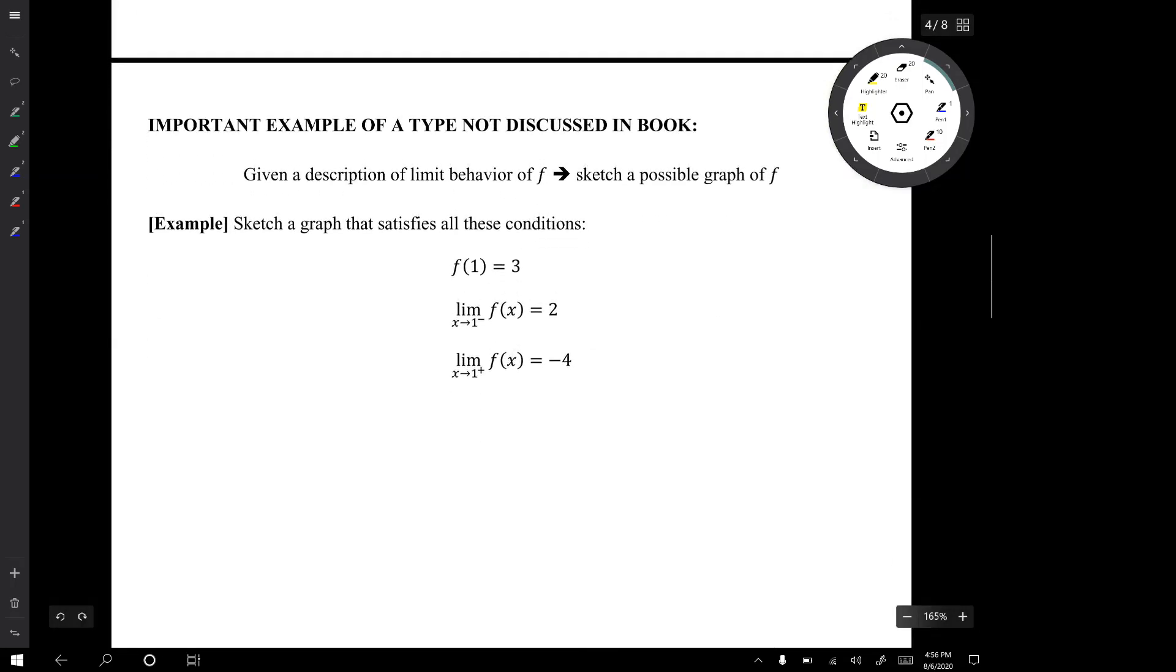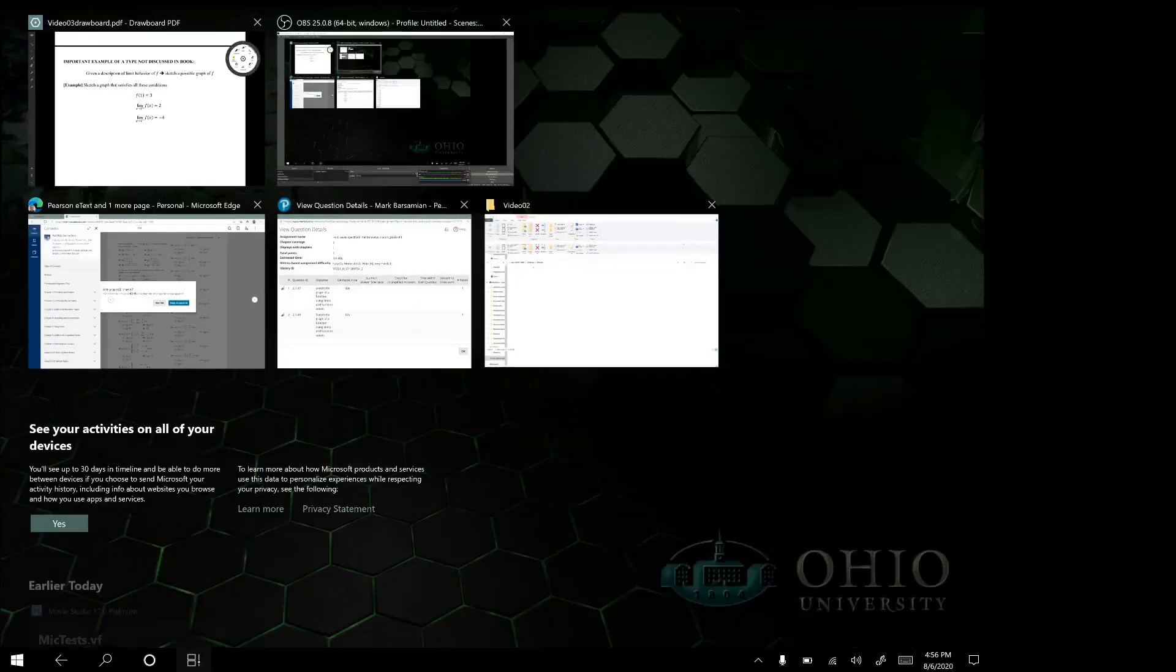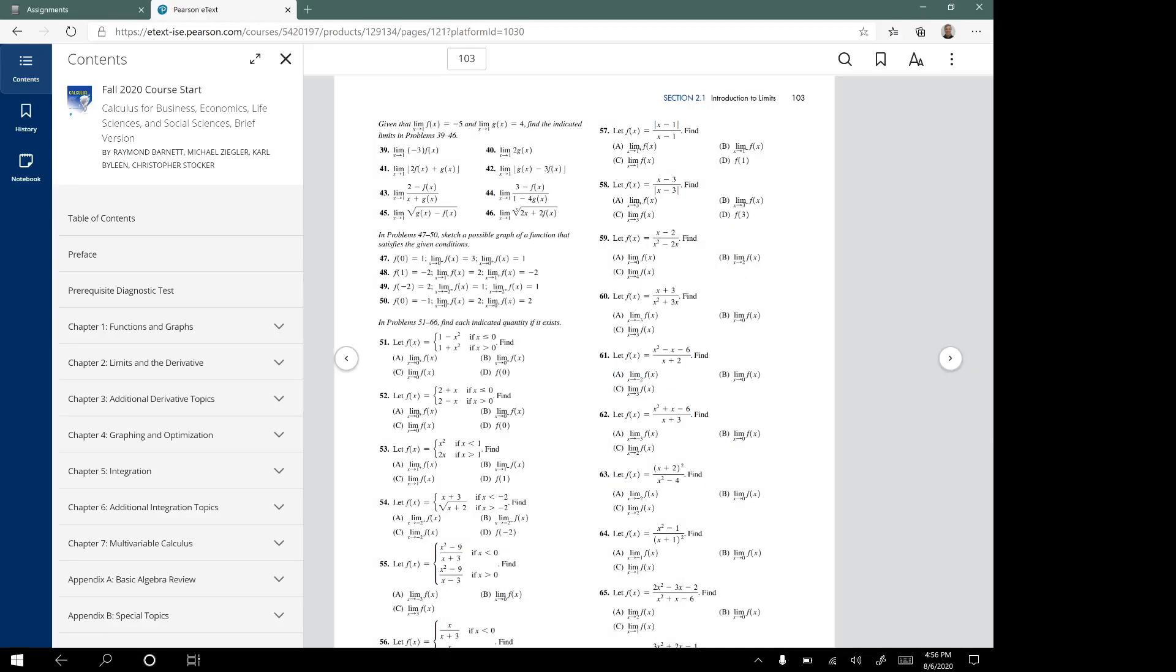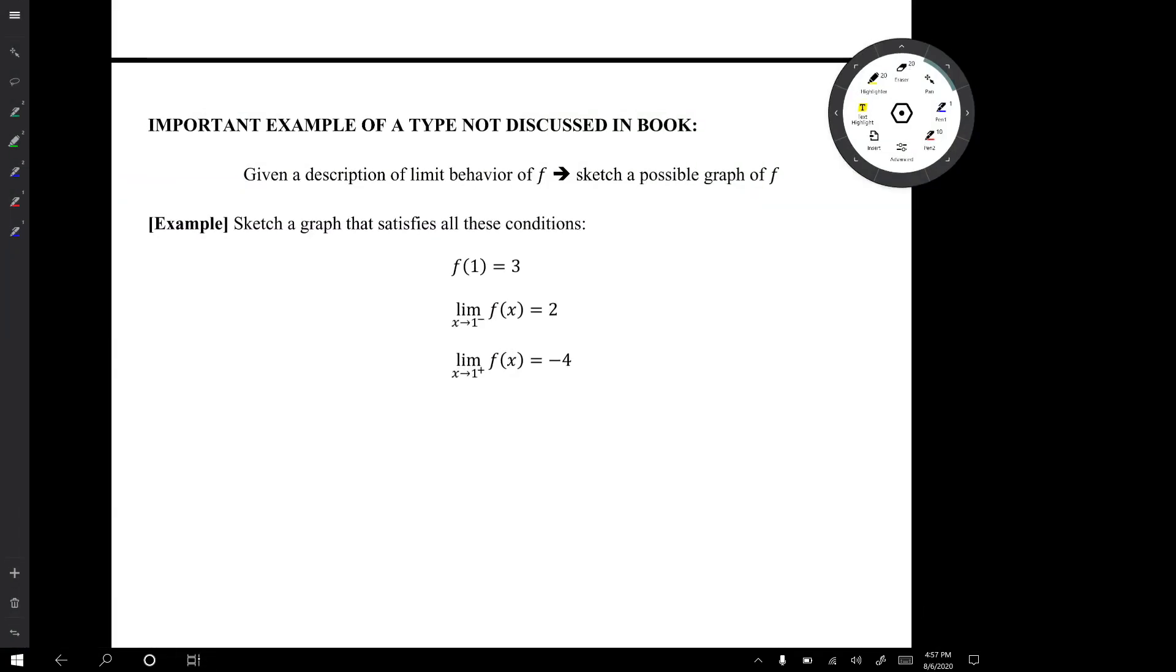We're going to do an important example of a type that's not discussed in the book. So given a description of the limit behavior of a function, sketch a possible graph of the function. Now this is not discussed in any examples in the book but I want to point out that this example is like some examples that are in the textbook exercises. So if you look at exercises for section 2.1 on page 103, look at exercises 47, 48, 49, 50, they all have to do with given information about the limit behavior of a function sketch a possible graph of that function.